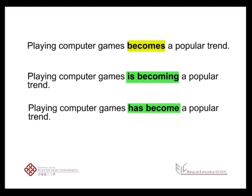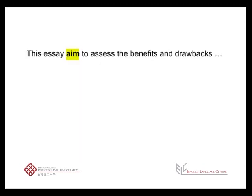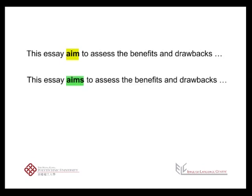Let's look at the next sentence. Gigi's written a clear aim of the essay. But there's another common grammar mistake. This time, the tense is correct, but the verb does not agree with the subject. The subject 'essay' is singular, so the verb needs to be in the third person form.